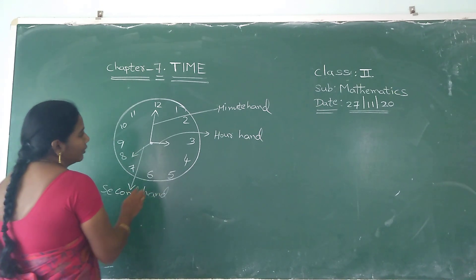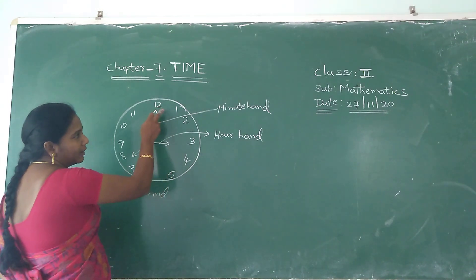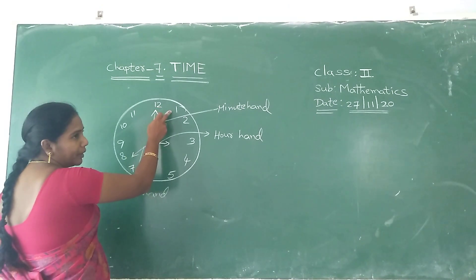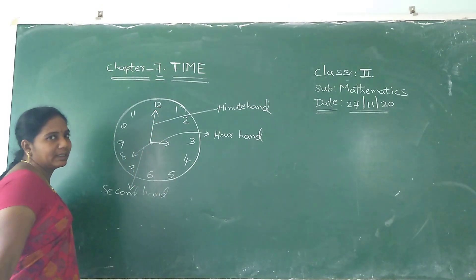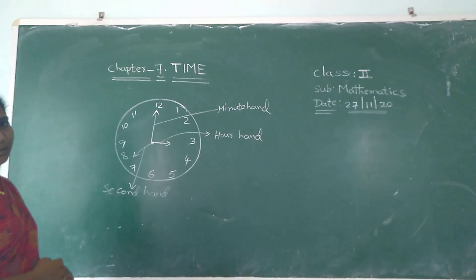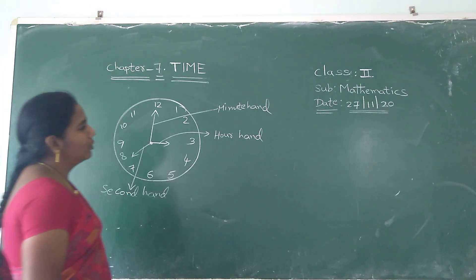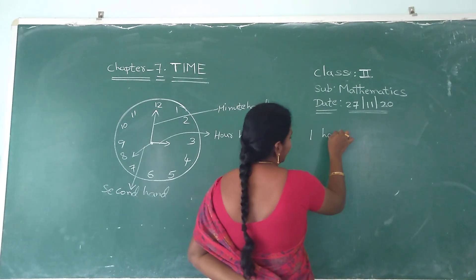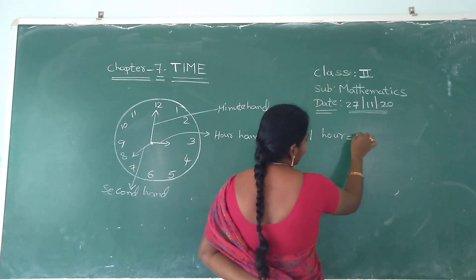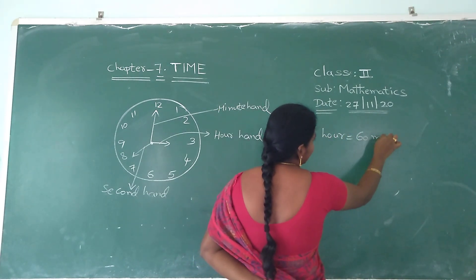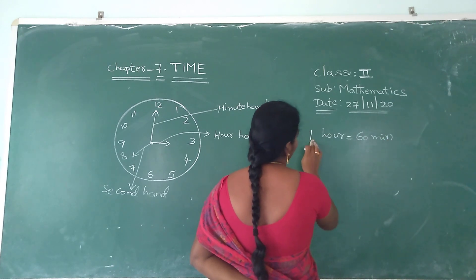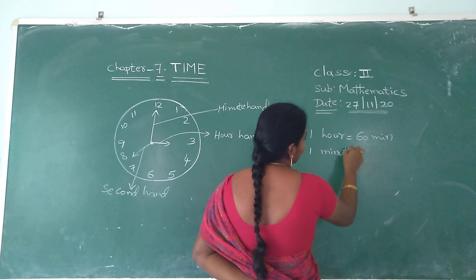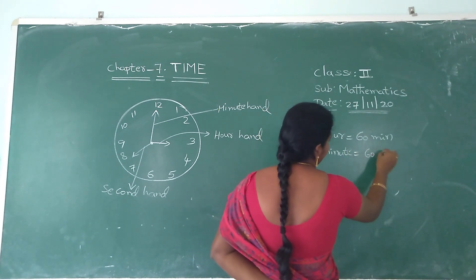Whenever the hands move from one number to another number, how many minutes does it take? 5 minutes. So one hour is equal to how many minutes? One hour is equal to 60 minutes. So one minute is equal to how many seconds? 60 seconds.